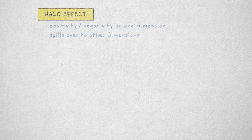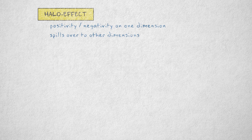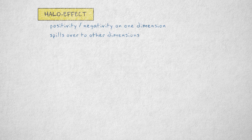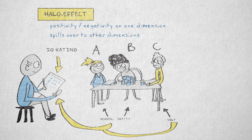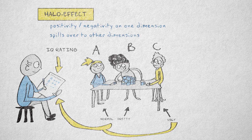The halo effect occurs when a positive or negative rating on one dimension spills over to other dimensions of behavior that are rated or evaluated. A well-known example is that more attractive people are generally rated as more intelligent or better at their job.